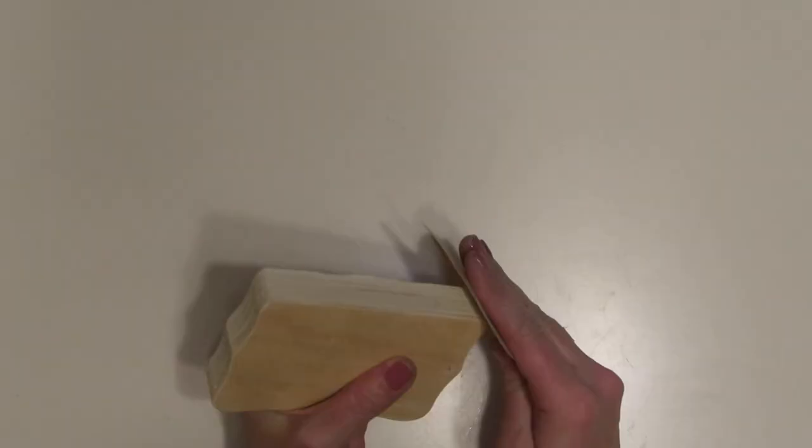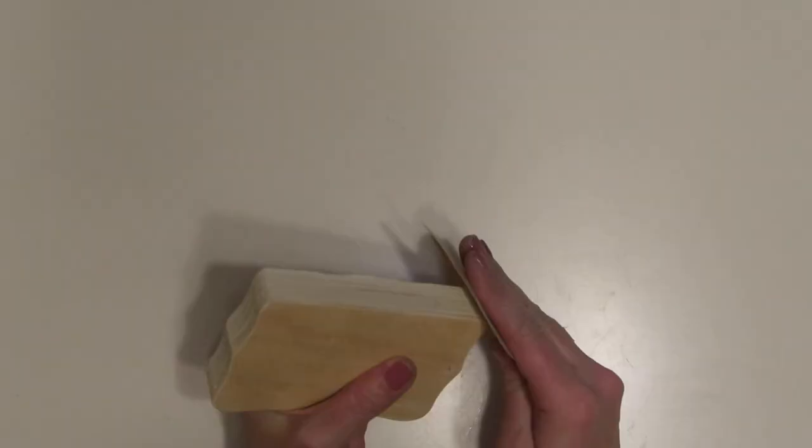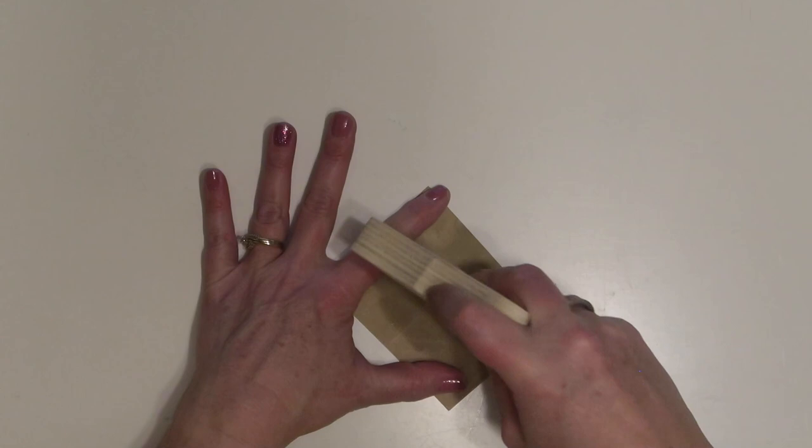I'm going to take a piece of sandpaper and I'm rounding off the corners where I just sawed off that edge, just to make them a little more of a softer edge, and then I'm sanding any rough edges and just getting it all smooth and ready to paint.